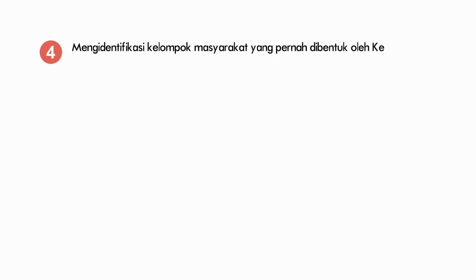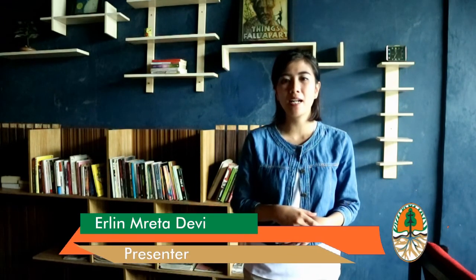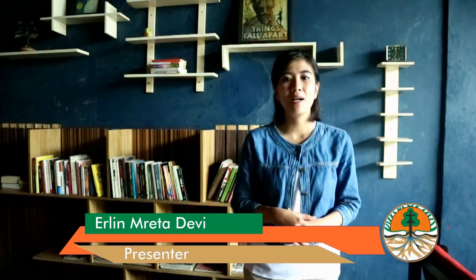4. Mengidentifikasi kelompok masyarakat yang pernah dibentuk oleh Kementerian Lingkungan Hidup dan Kehutanan misalnya KBD, KBR dan lain-lain. Selanjutnya tahap kedua adalah pembentukan KTH. KTH dapat dibentuk dari kelompok baru atau pengembangan dari lembaga masyarakat yang sudah ada. Lembaga yang sudah ada memiliki modal sosial yang baik, sehingga KTH yang dibentuk dari pengembangannya memiliki keunggulan karena pembinaannya dapat berjalan lebih terarah. Persyaratan, proses, dan contoh surat-surat pembentukan KTH dapat dilihat dan dipelajari pada modul pelatihan ini.